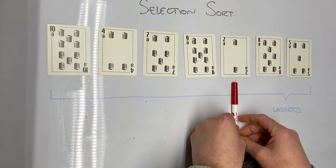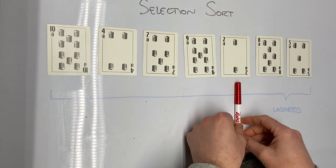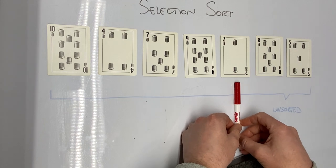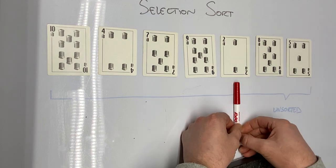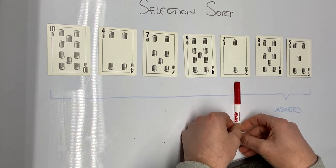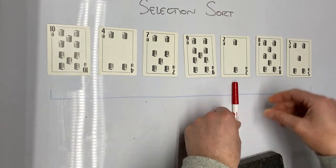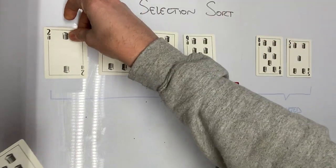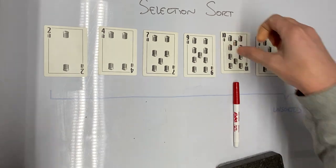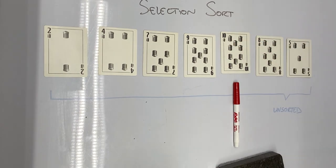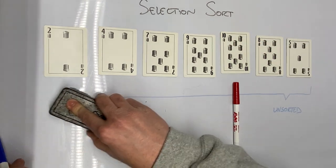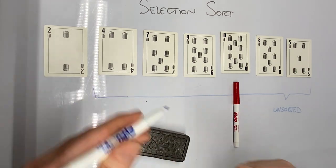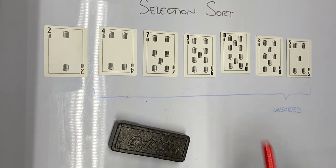With the selection sort, once we determine which card has the least value, we swap it with the card at the beginning of the unsorted region. So I'm going to swap the two and the ten. Now my unsorted region changes slightly because the first card is now in the correct place.